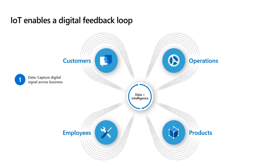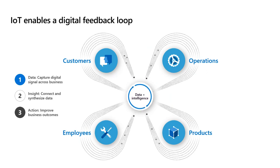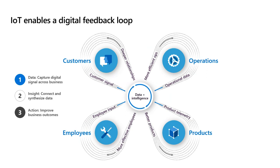We also talk about the digital feedback loop, which has three parts. First, we're capturing digital signals across the business — taking telemetry data from products, connected products, employee input, and customer signals. Second, we're driving insights from that collected data and making sense out of it. And third, once we understand those insights, we can take action to improve business outcomes. IoT is one data type going into your full business solution, driving valuable action.